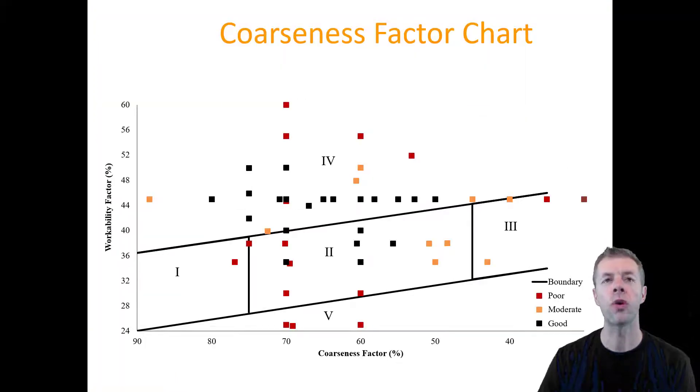So in this plot, it's called the workability factor or the coarseness factor chart. There's a term called the coarseness factor that you plot on the x-axis, and then another term called the workability factor. Again, there's lots of details in the paper below. There's these different zones, and these different zones are supposed to be different places where you're supposed to go for different types of performances, for different mixtures. A lot of DOTs, though, simplify this and say that you should be in this center box, zone 2. And they'll even say you should be in a smaller box within zone 2.